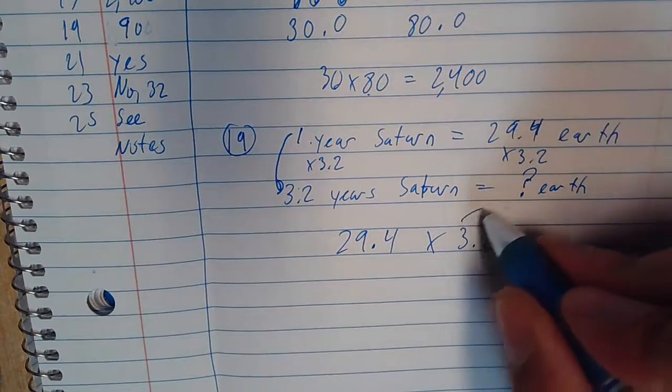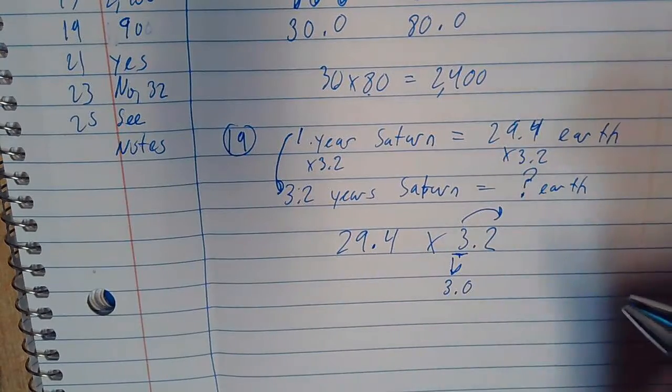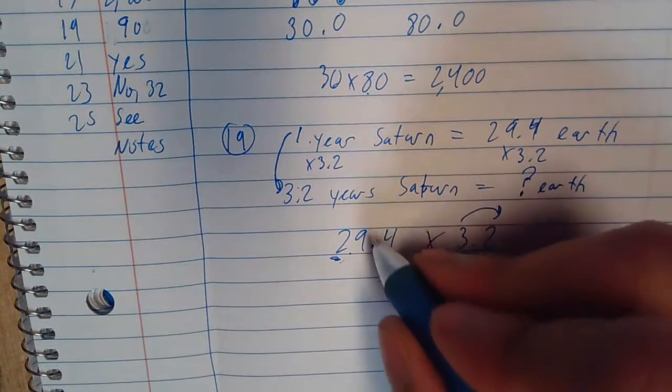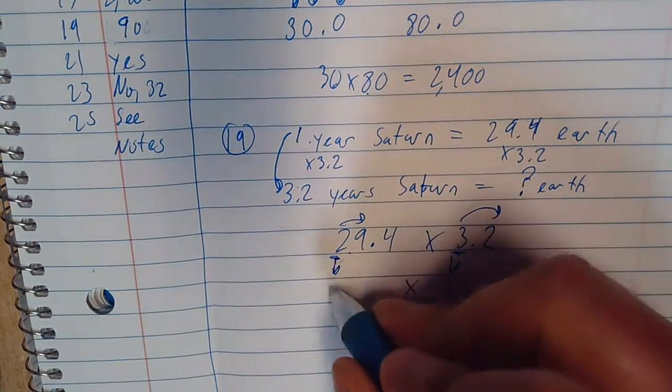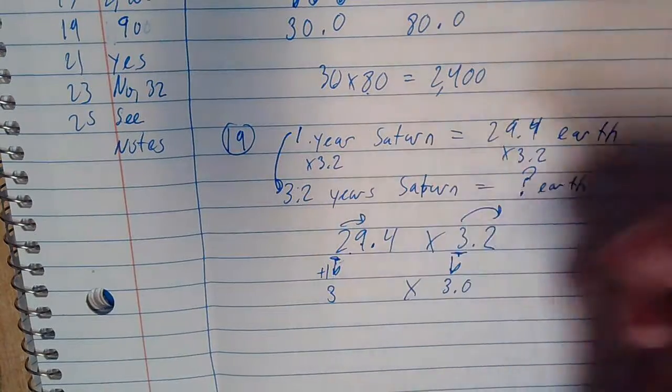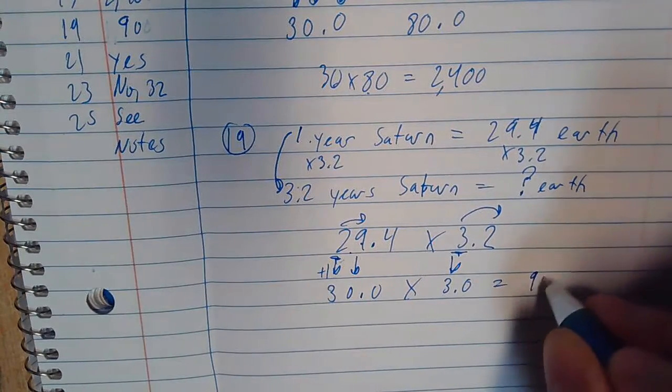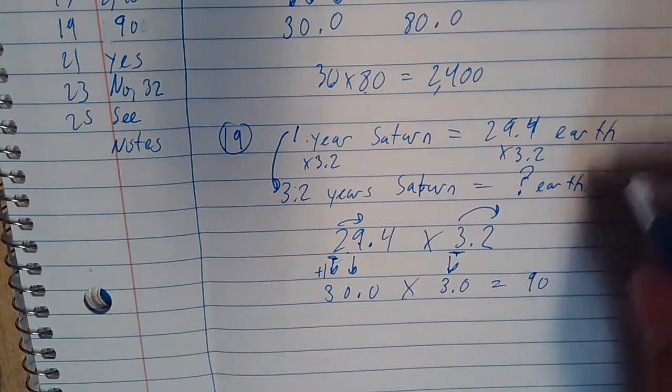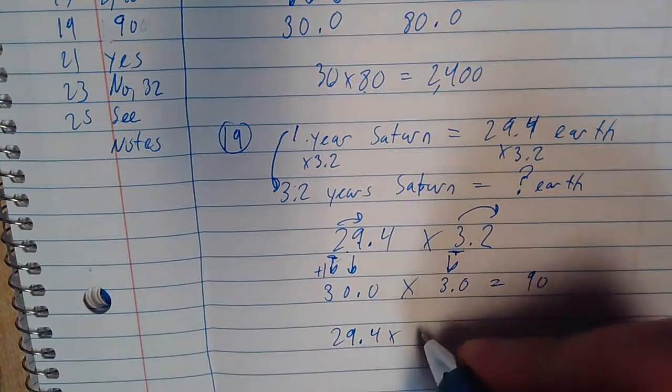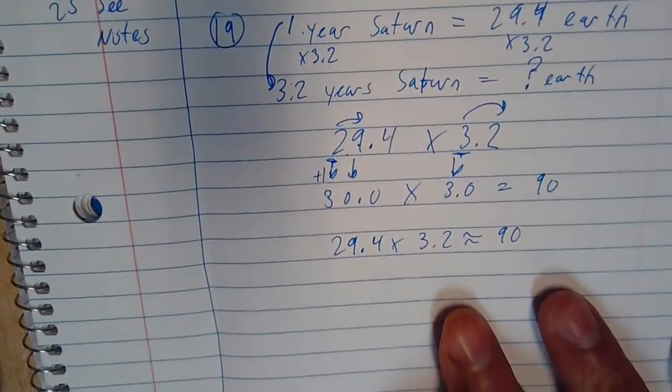29.4 times 3.2. This stays the same, 3.0. And this, yes, I'm going to go with the tens place because that will give me 30, and 30 is easy to multiply. This becomes 3 because I added 1. Why? Because the 9, the number next to it, is more than 5. Everything else has to become 0. 30 times 3 equals 90. So about 90. So the equation 29.4 times 3.2 is about 90.